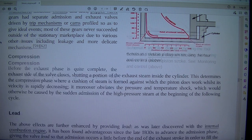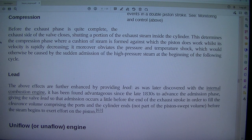Compression. Before the exhaust phase is quite complete, the exhaust side of the valve closes, shutting a portion of the exhaust steam inside the cylinder. This determines the compression phase where a cushion of steam is formed against which the piston does work whilst its velocity is rapidly decreasing. It moreover obviates the pressure and temperature shock which would otherwise be caused by the sudden admission of the high pressure steam at the beginning of the following cycle.